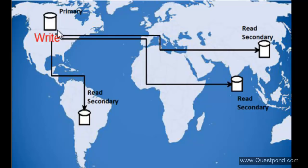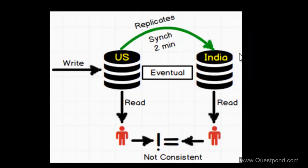The main database where data is written we term as the primary database or write database. The other databases we term as read databases or secondary databases. This is the vocabulary we will use henceforth. One of the biggest problems in achieving a planet scale database architecture is Consistency. Here is a diagrammatic representation: we have a US write database, and from it we are synchronizing to an Indian database. If we write something to the US database, it may take one or two minutes to replicate to the Indian database. Before synchronization finishes, a user reading from the US sees different data than a user reading from India — the data would not be consistent.